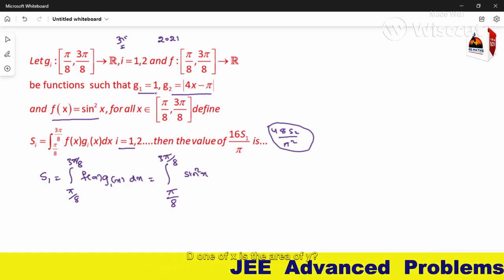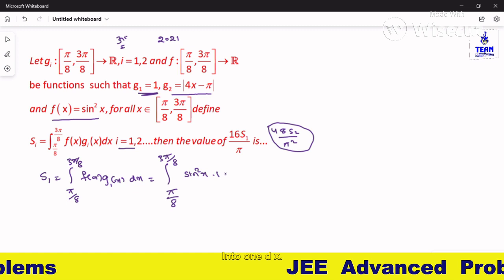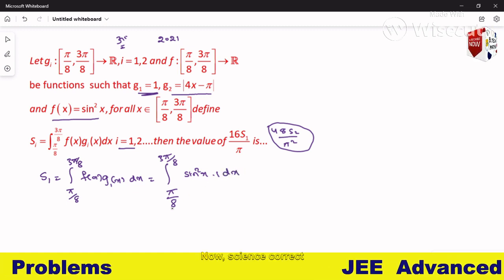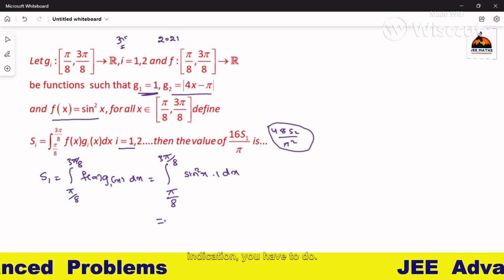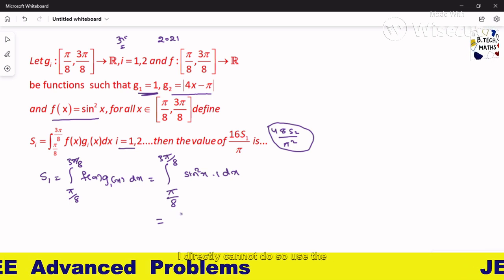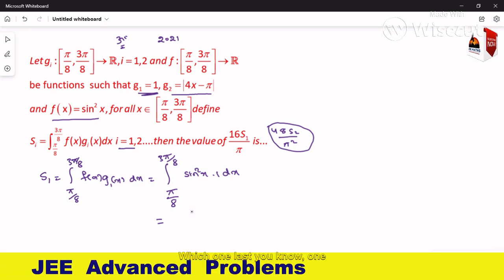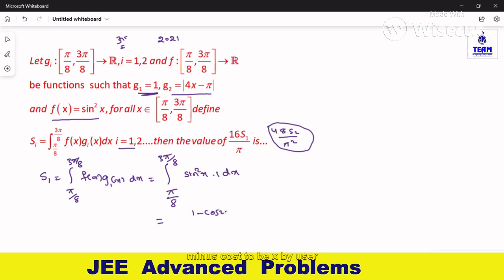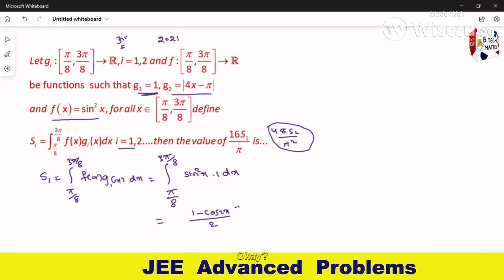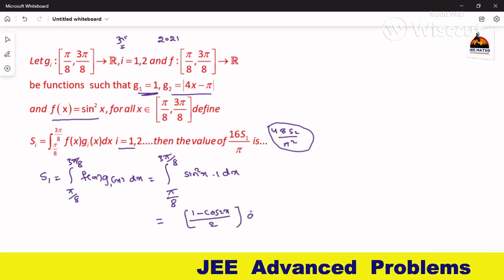What is g1 of x? g1 of x is 1, so sine squared x times 1 dx. Now sine squared x integration, we cannot directly integrate, so use the formula: 1 minus cos 2x by 2.